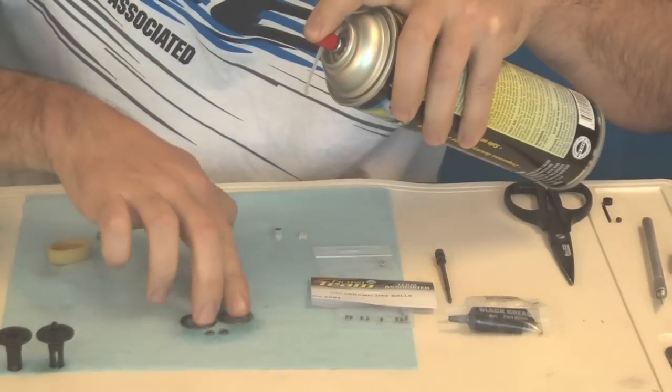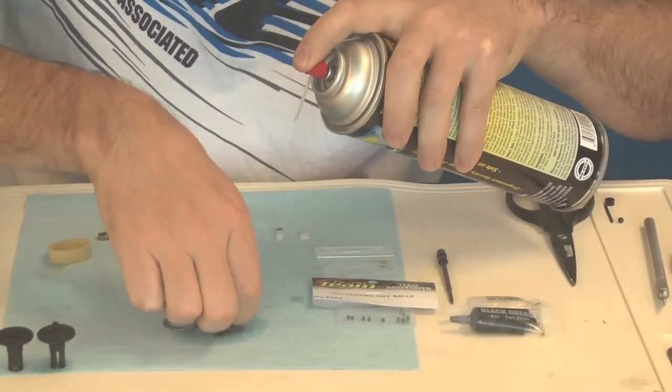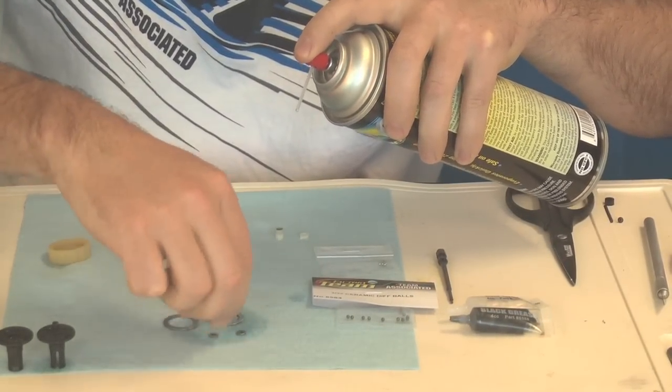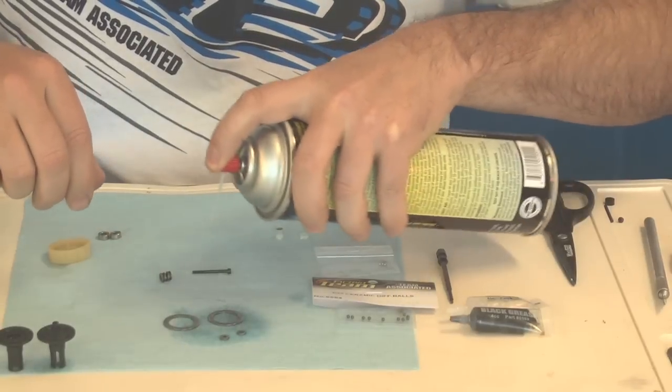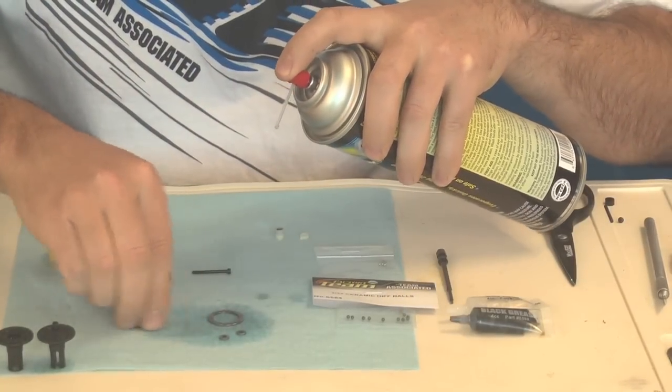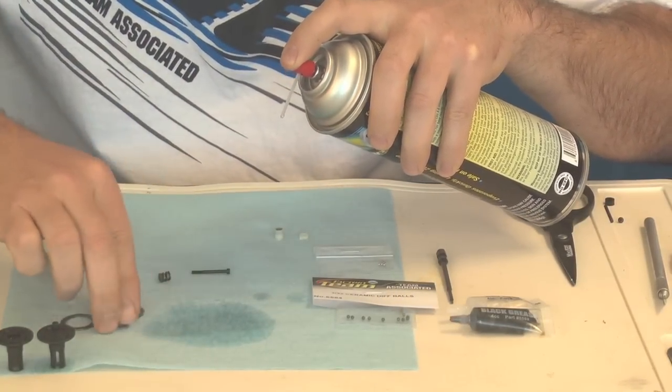I spray off the diff rings. Flip those over. Spray the other side. Just kind of get them cleaned off. When everything's nice and clean, no debris.